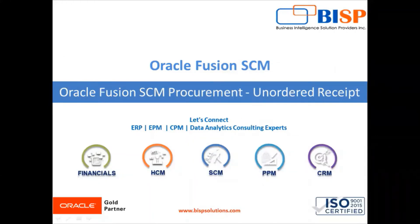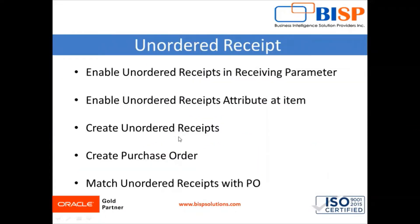Hello everyone, welcome to BISP Solutions. My name is Shivam Tamra and today's topic is unordered receipt in Oracle Fusion Supply Chain Management Procurement Application. When we place any order we receive the material and create the receipt. Sometimes it happens that without placing any order to a supplier, the material arrives, so at that time we record items using an unordered receipt.